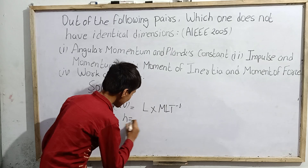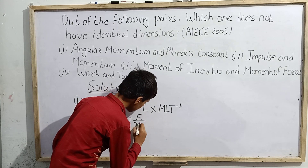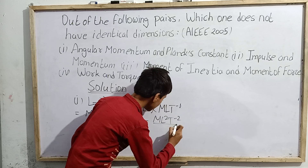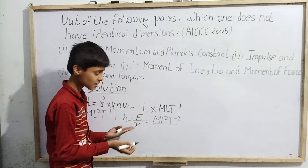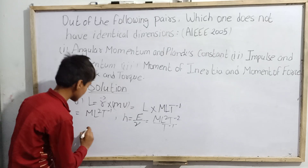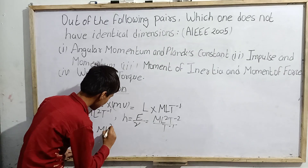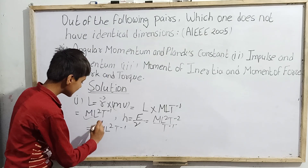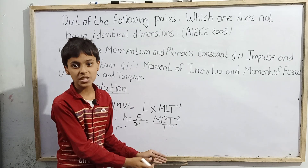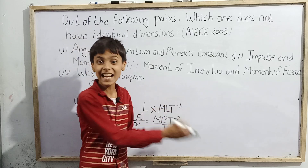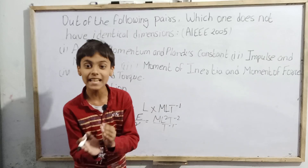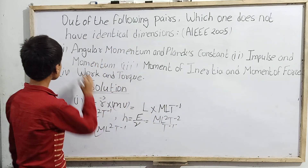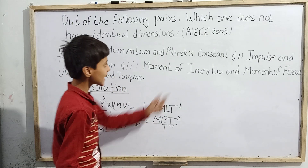Now for Planck's constant h: h = E/ν. Energy E has dimensions ML²T⁻², and frequency ν has dimensions T⁻¹. So h = ML²T⁻² / T⁻¹ = ML²T⁻¹. Since both angular momentum and Planck's constant have dimensions ML²T⁻¹, they match — so option A is wrong.